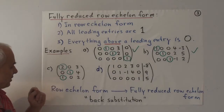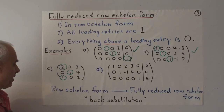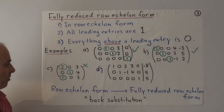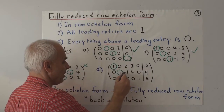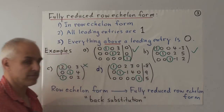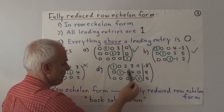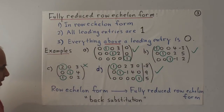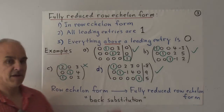Another matrix also has leading entries that are all one with zeros above them — also in fully reduced row echelon form. A third matrix is not even in row echelon form because the leading entries don't go down to the right, and has a leading entry of two instead of one — definitely not in fully reduced row echelon form. A fourth matrix has leading entries that are all ones, is in row echelon form, and has zeros above leading entries — so it is in fully reduced row echelon form.